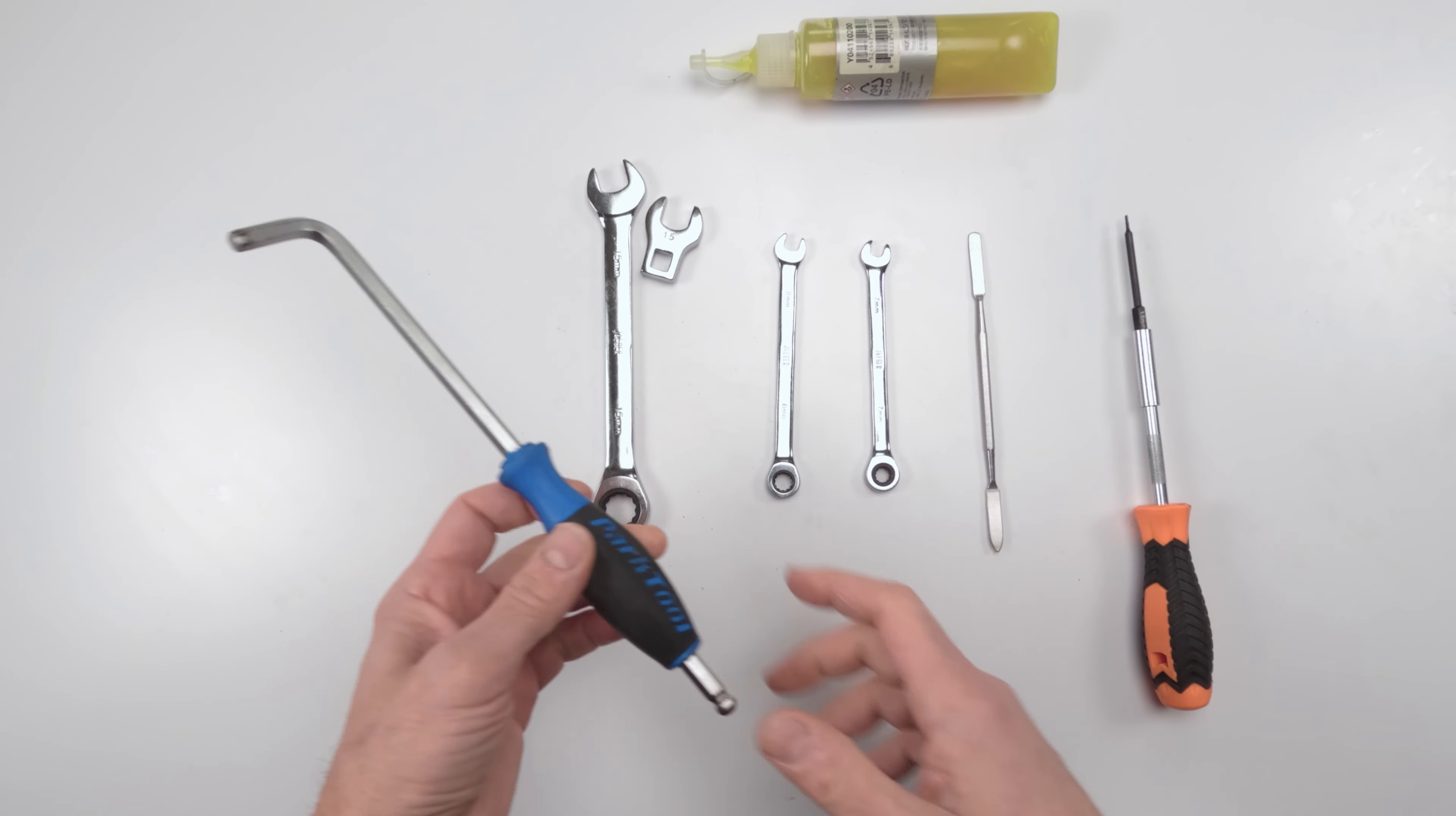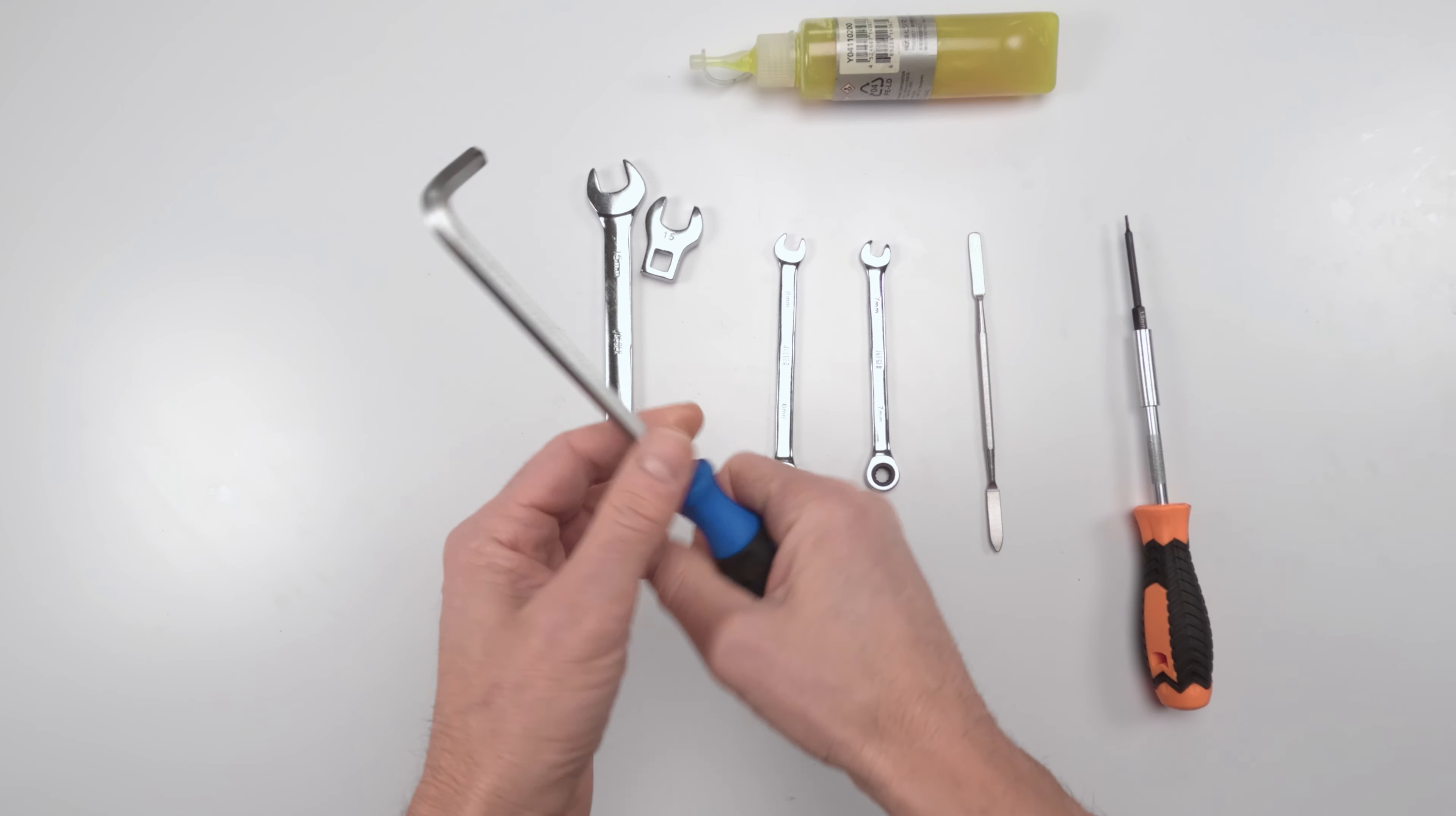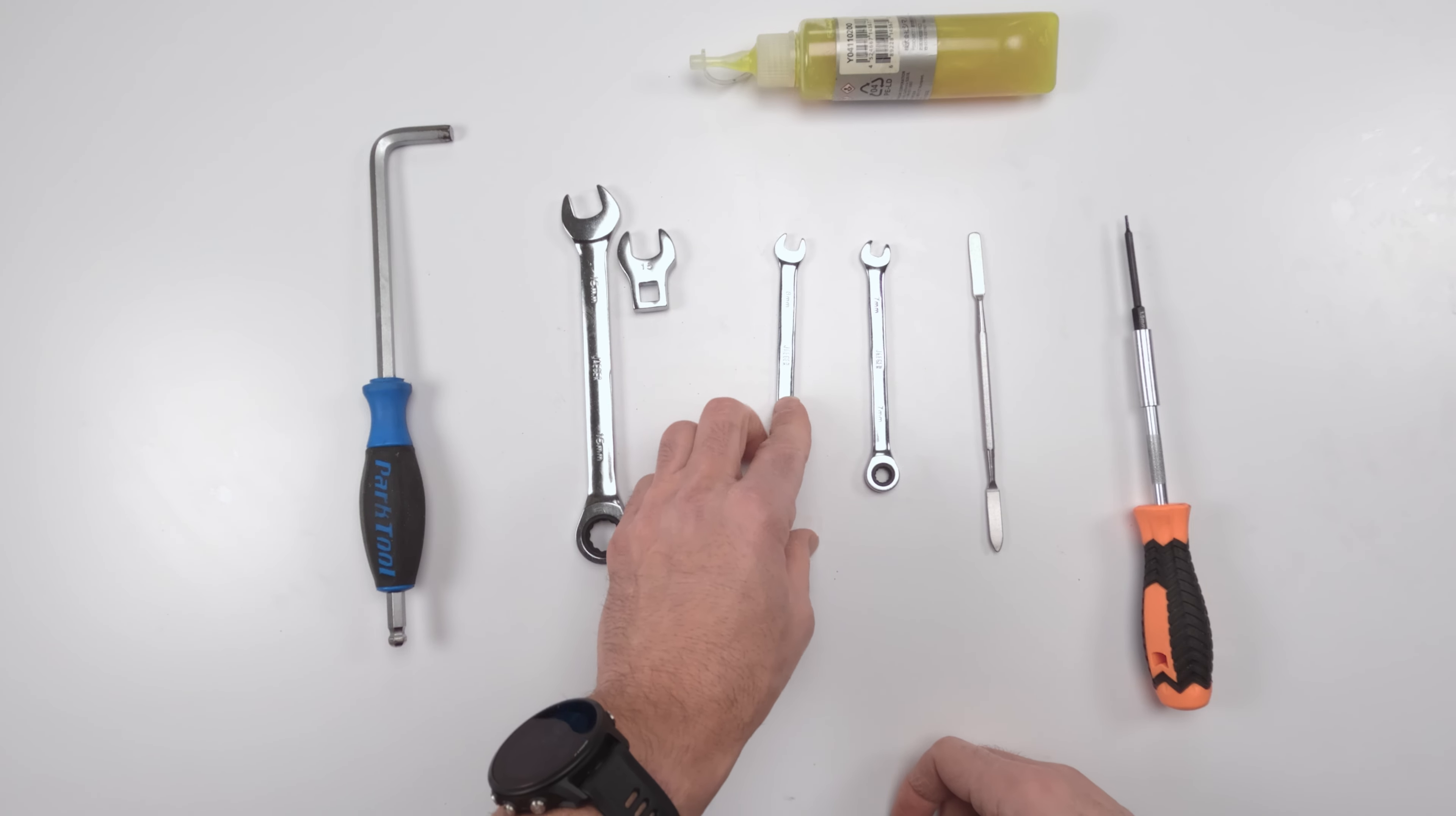As for tools, we are going to need an 8mm Allen or a pedal wrench, just like this one. Very handy. A 15mm wrench with a 15mm crow foot, an 8mm wrench, and a 7mm wrench.